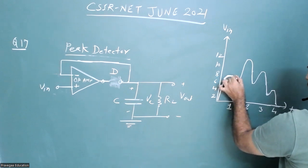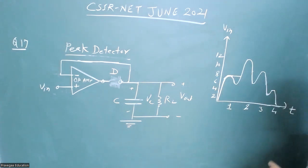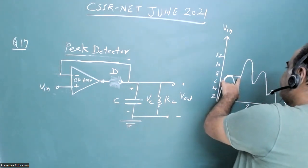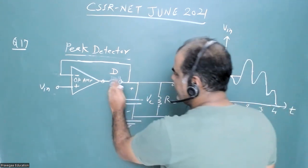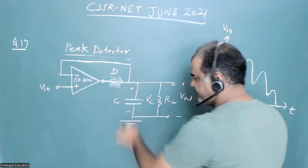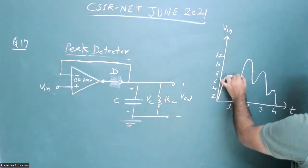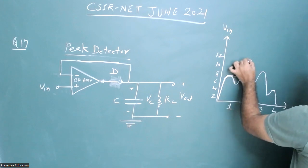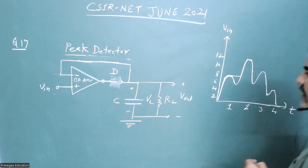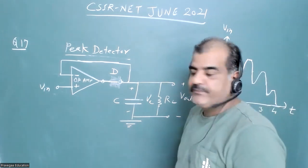Again, once you increase the voltage more than this peak value, again this diode will get forward biased and your capacitor will charge up to the next peak value. You'll get an output at the next peak value.